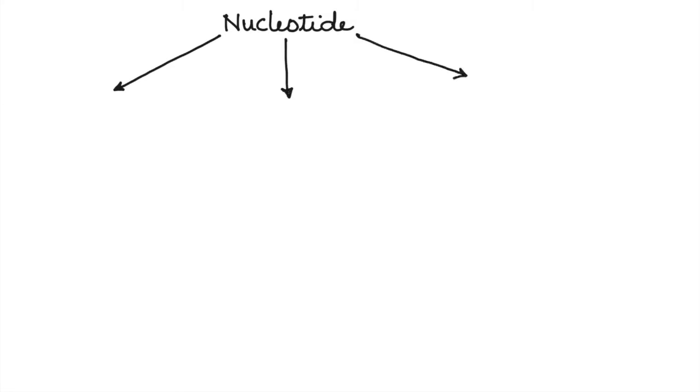Now before we draw, let us see what is a nucleotide. Nucleotides are the basic monomers that make up DNA and RNA. It has three parts: a phosphate group, a pentose sugar, and a nitrogenous base.